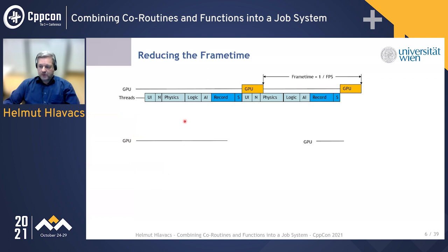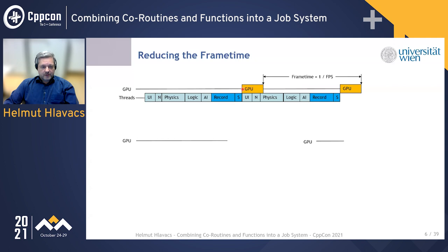Usually there is only one thread, and if there is one thread then we run all the systems serially — from left to right through all the systems, then record commands, and submit the output to the GPU. When the GPU renders and finishes it produces an output frame, the whole thing starts again, and you can measure the frame time — one over the frame rate, the FPS. We want to keep the frame time as small as possible.